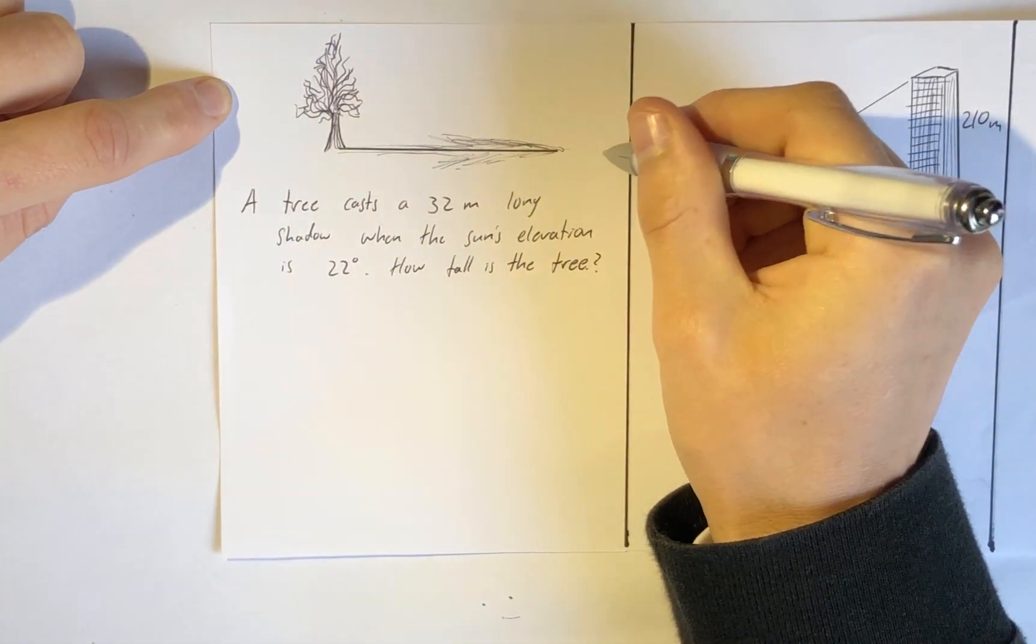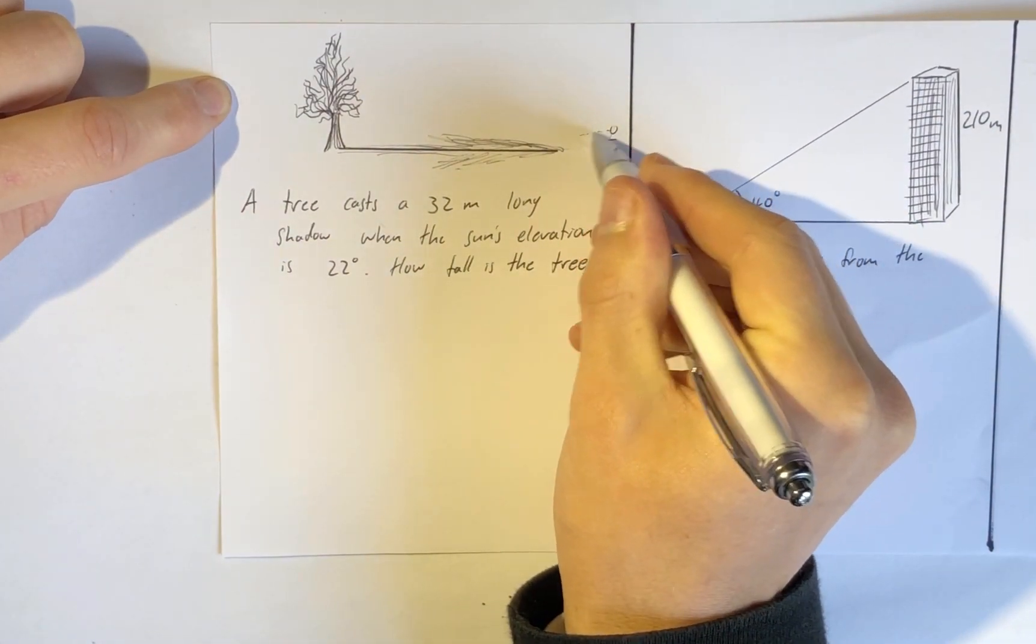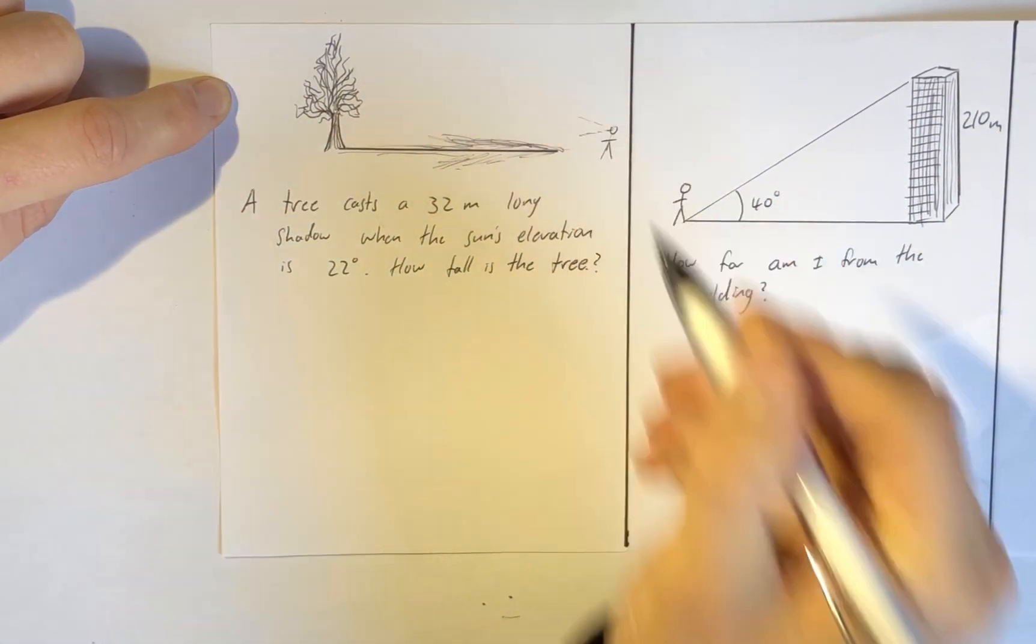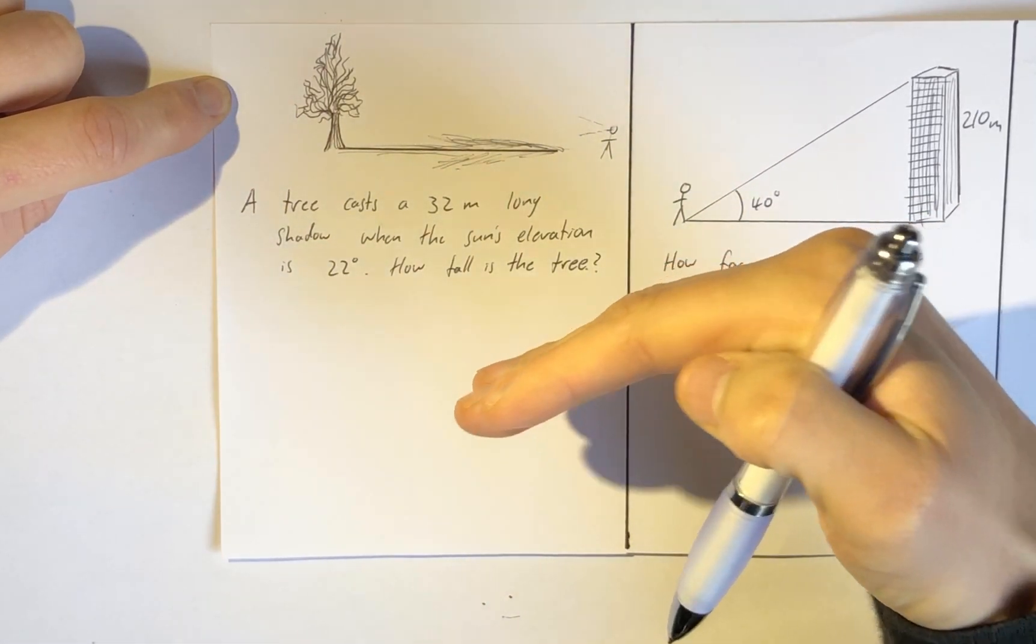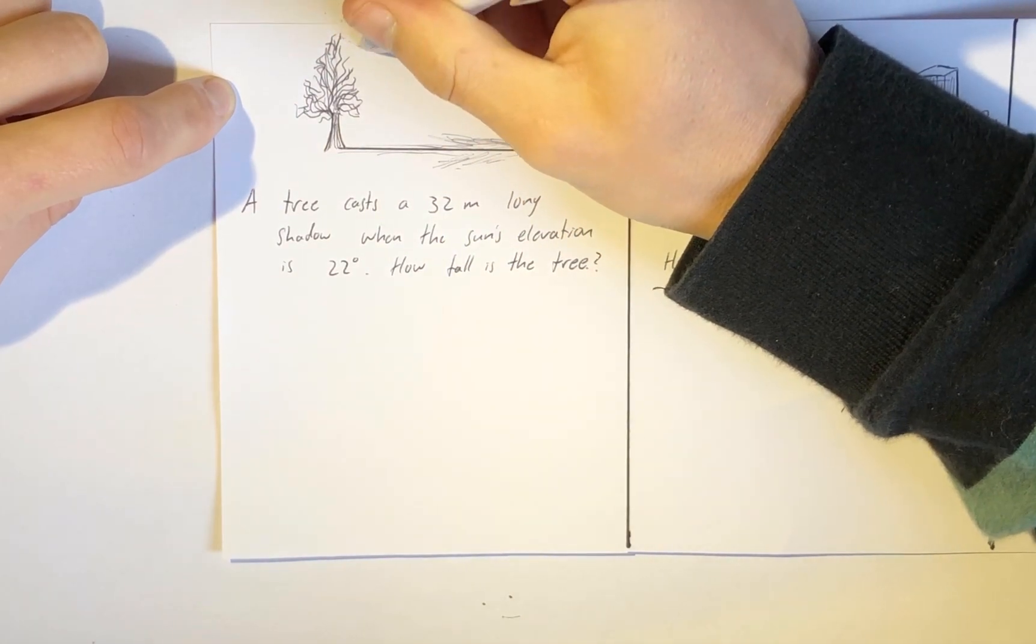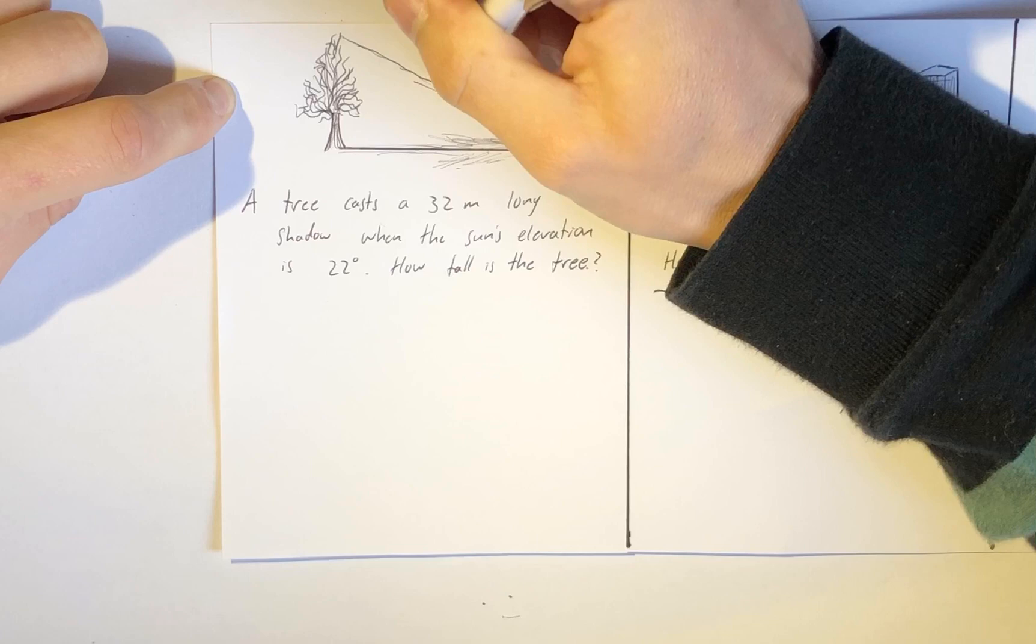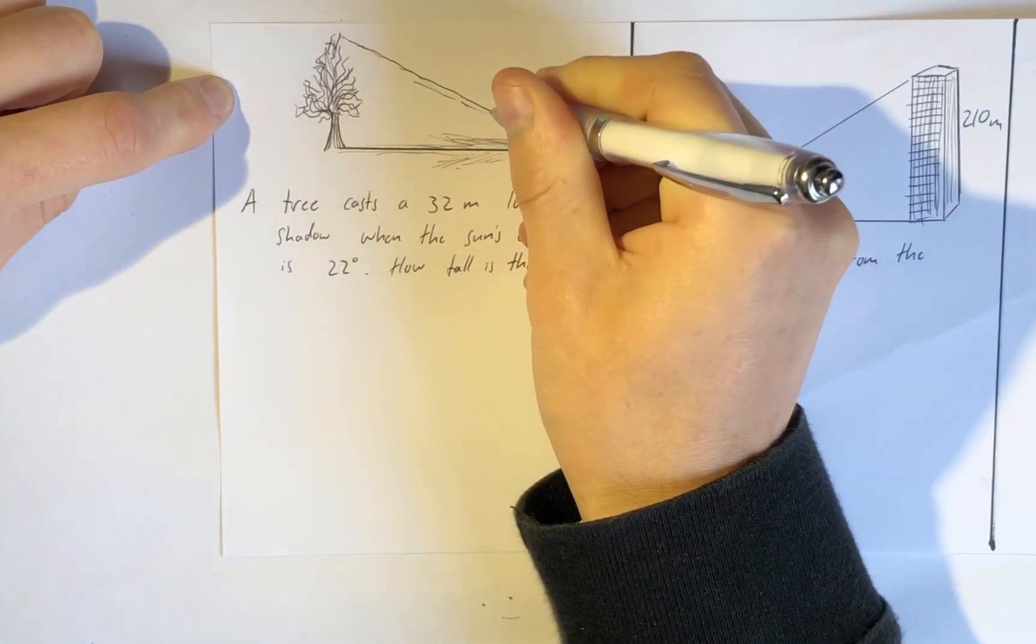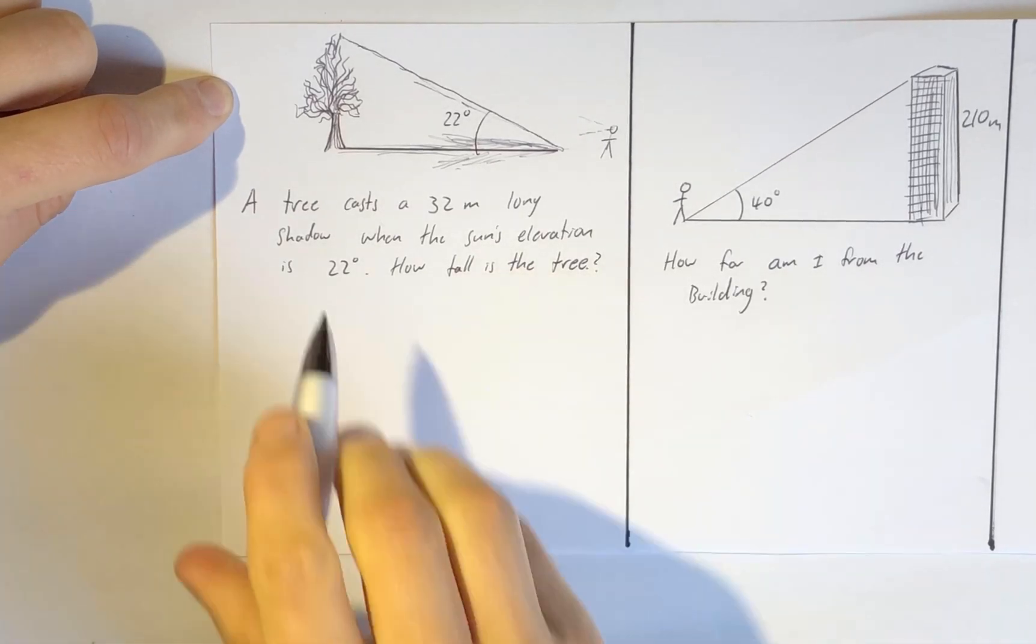If I was standing here and I looked up at the Sun, probably with sunglasses on, it would be at 22 degrees high. So that means that the angle that this tree makes with its own shadow is 22 degrees.